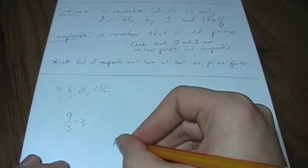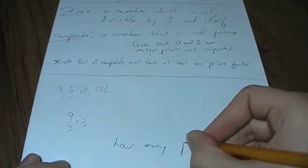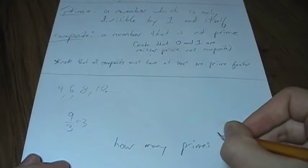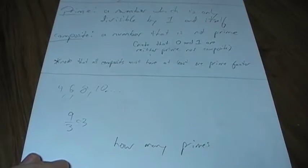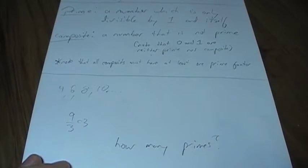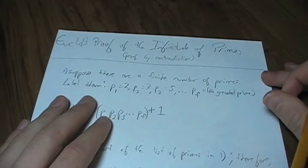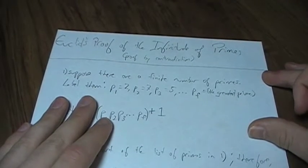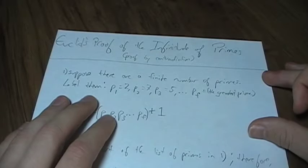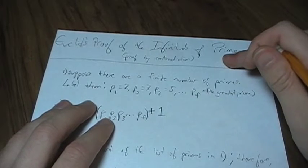So, how many primes are there? Well, it turns out, circa 300 BC, Euclid considered this problem and proved that there are, in fact, infinitely many primes. And this is a proof by contradiction.